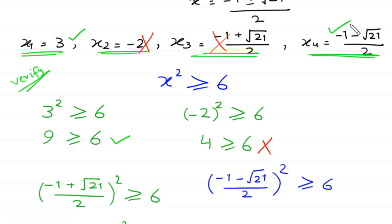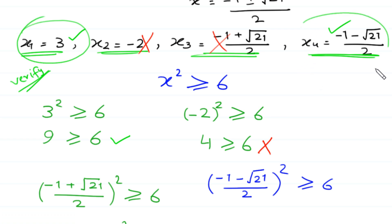So finally, we have two valid solutions: x equals 3 and x equals negative 1 minus square root of 21 over 2.